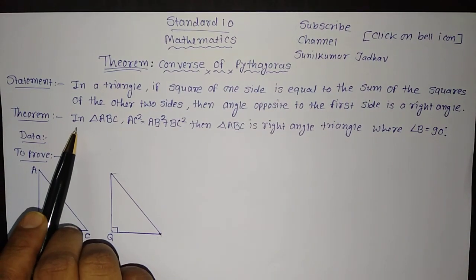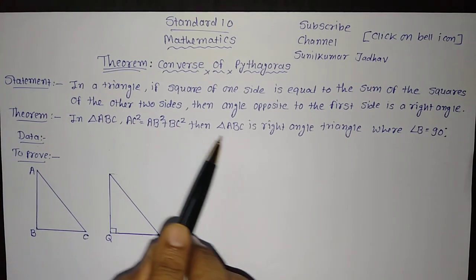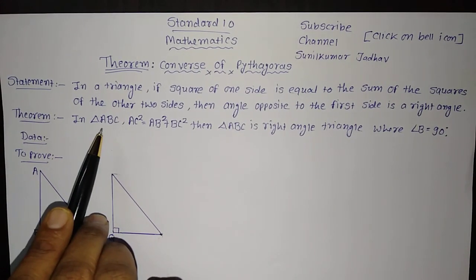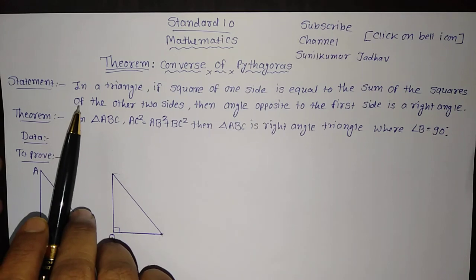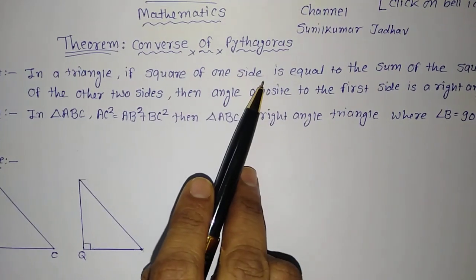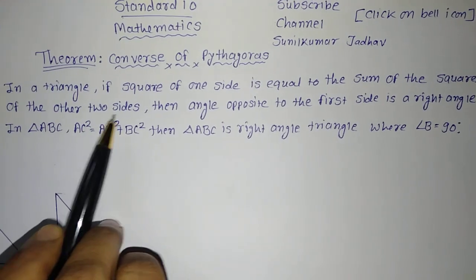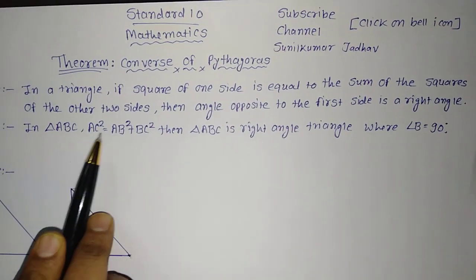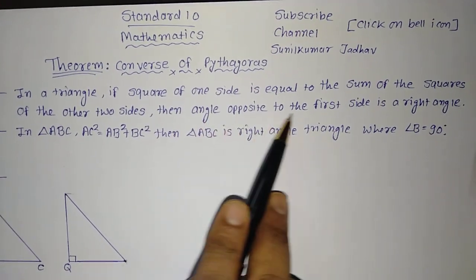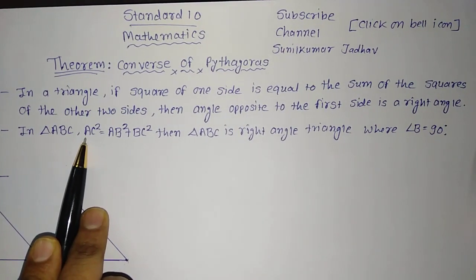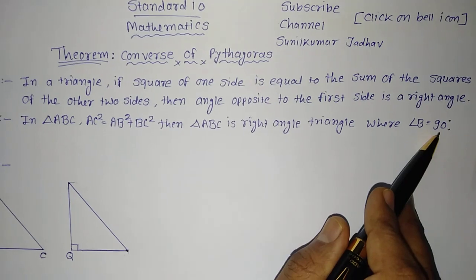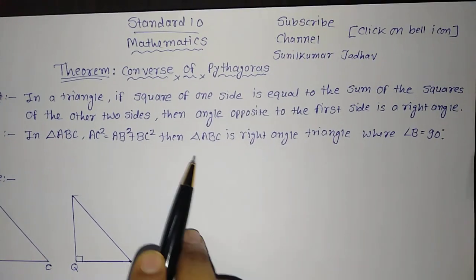The theorem can also be asked this way: In triangle ABC, if AC² = AB² + BC², then triangle ABC is a right angle triangle where angle B = 90°. They can change the names of the triangle. In this statement, AC² is the square of one side, AB² + BC² is the sum of squares of the other two sides, and the angle opposite to AC is angle B, which we need to prove is a right angle, making triangle ABC a right angle triangle.